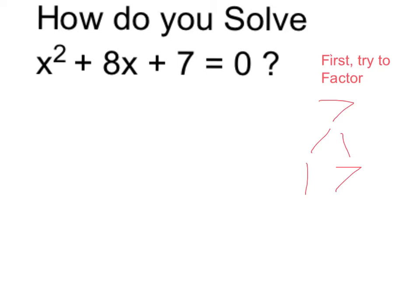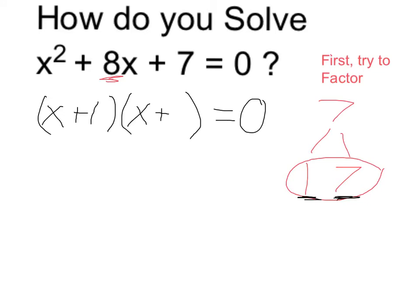Because 7 is a prime number, the only factors possible are 1 and 7, and those do happen to add up to 8. So we can factor it as two binomials. We can rewrite this whole thing as x plus 1 times x plus 7.